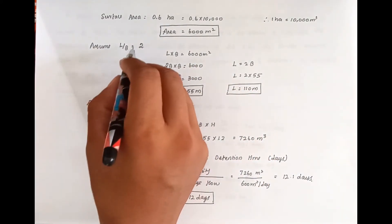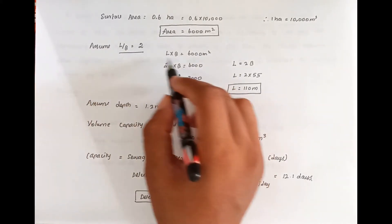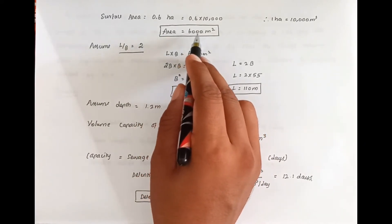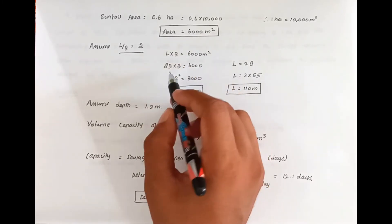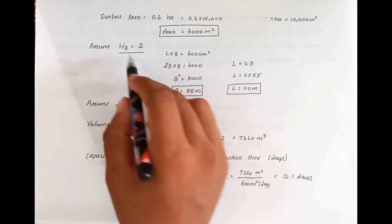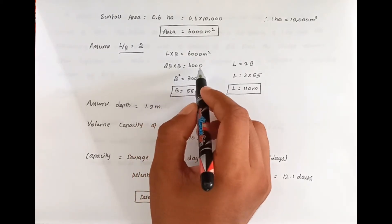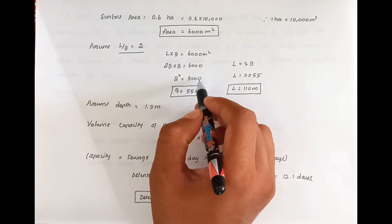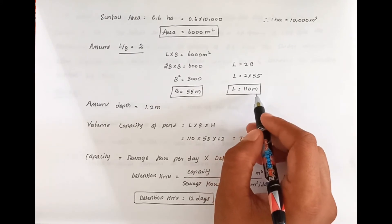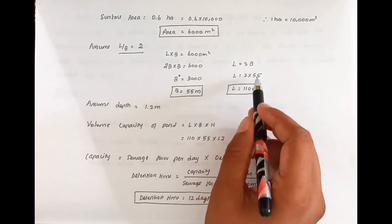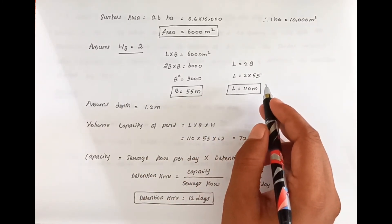Now we assume the L to B ratio and that the shape is a rectangle. L to B ratio is equal to 2, so L equals 2B. Therefore, 2B × B equals 6000 m², giving B² equals 3000, so B equals approximately 55 m (rounded to 10). Then L equals 2B equals 110 m. So the length is 110 m and breadth is 55 m.